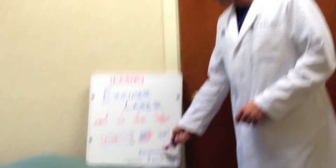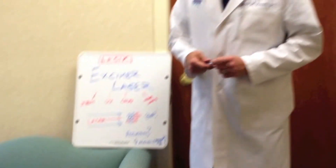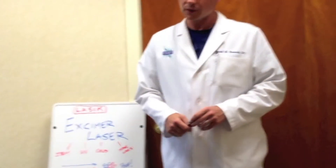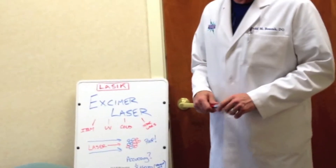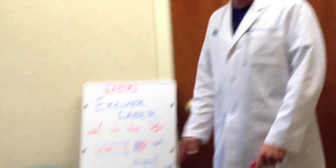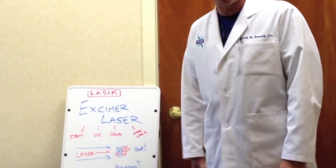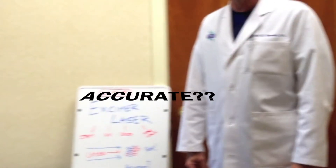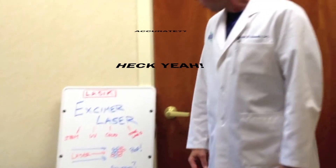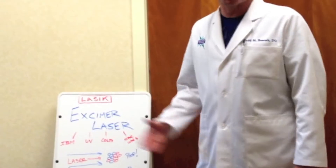The last thing we're going to talk about is the accuracy of the excimer laser. Is it accurate? Let me say that it is. In fact, the segments that the excimer laser cuts down on the cornea is one quarter of a micron in size — that's one quarter of a thousandth of a millimeter. It's really tiny stuff. In conclusion, the excimer laser is one of my favorite tools that I get to use in my professional life.